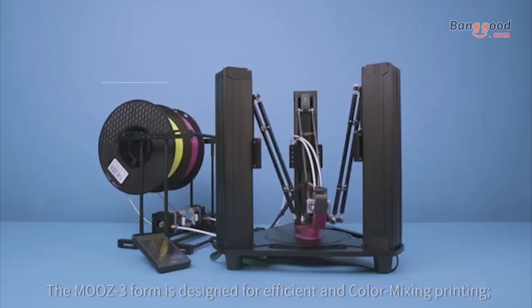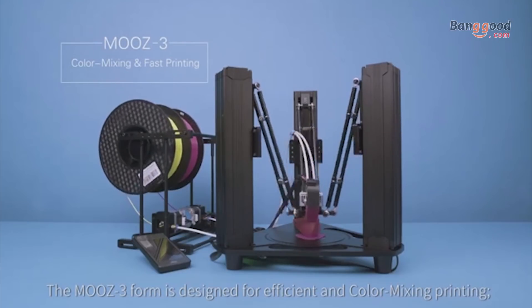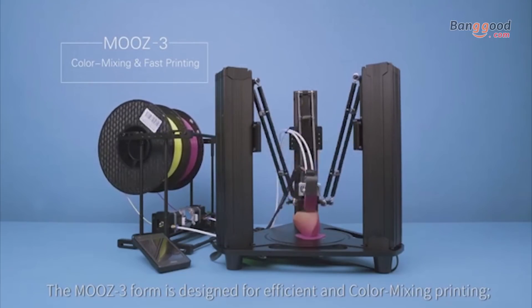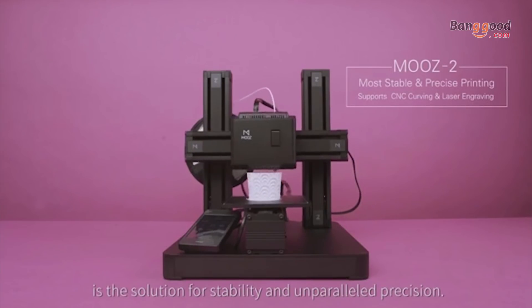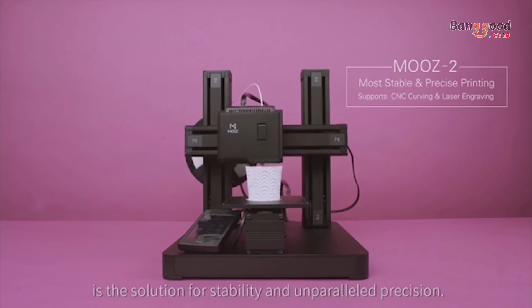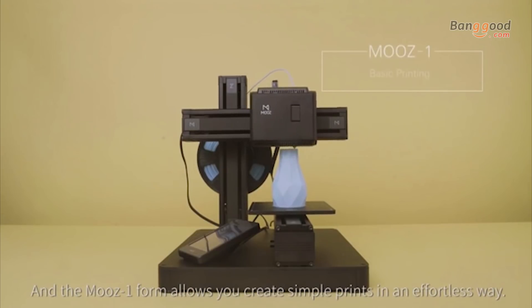The Moose 3 form is designed for efficient and color mixing printing. The Moose 2 form meanwhile is the solution for stability and unparalleled precision. And the Moose 1 form allows you to create simple prints in an effortless way.